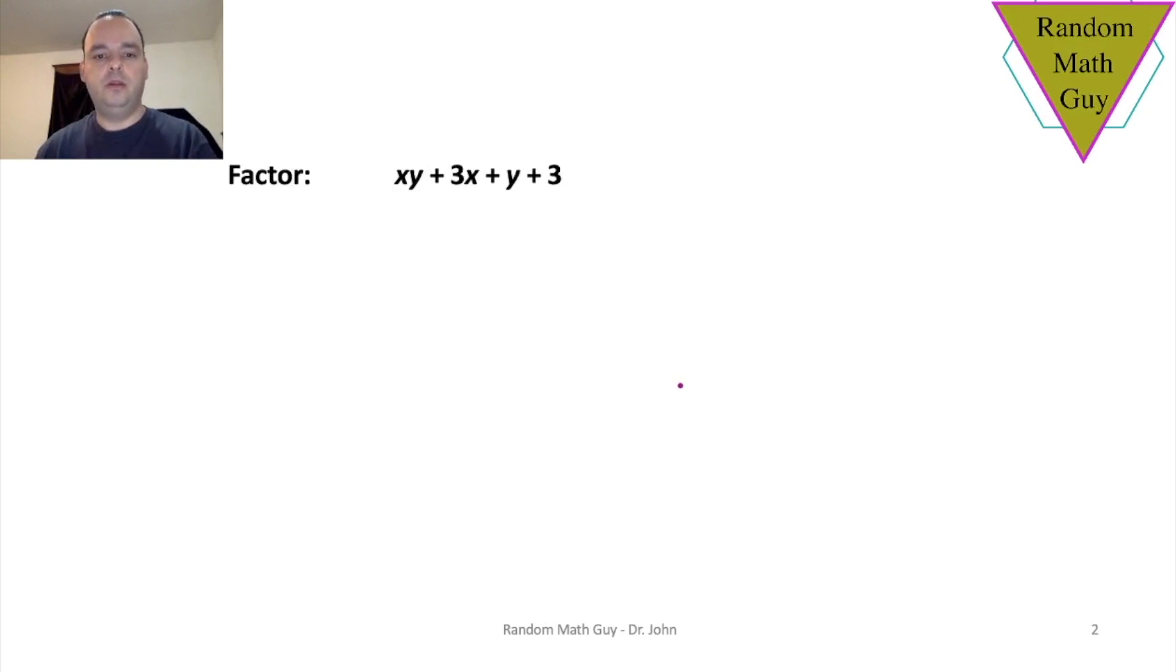Take a look at this example. Notice that we have four terms; however, there is not a value or a coefficient or a variable part that is common to all of them. So what do we do? Well, that's when you look at the next type of factoring in this video called grouping.